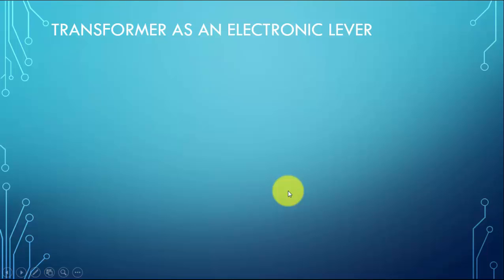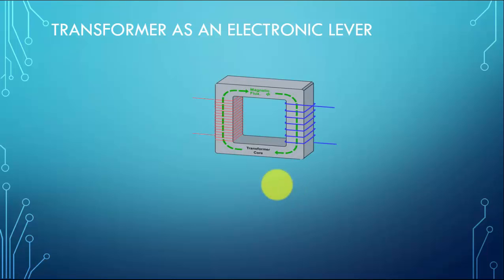You can view the transformer as an electronic lever. So here we have our two coils coupled by an iron core and that forms our transformer both at the primary and the secondary side.